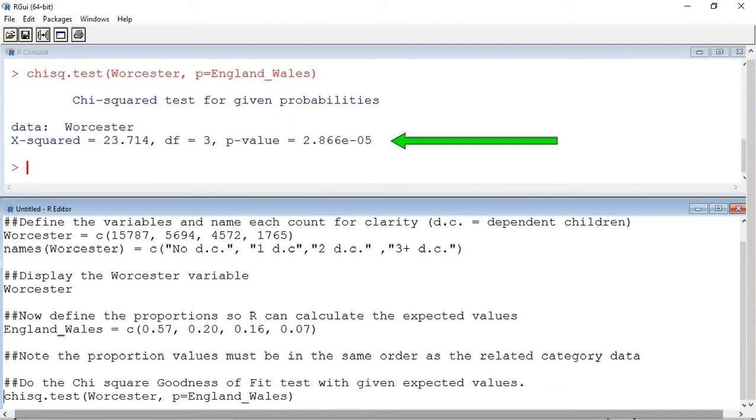Such a small value as 2.866 times 10 to the minus 5 suggests that we can reject the null hypothesis that there is a significant difference between the number of dependent children in households in the city of Worcester compared to the average number in England and Wales.